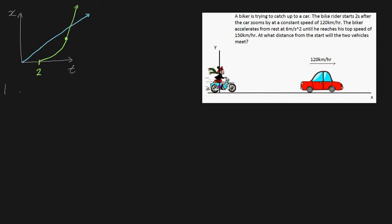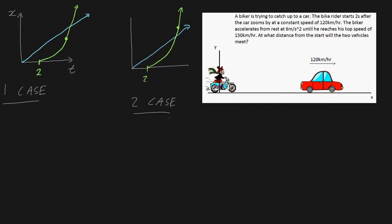That's case one. Another case is if the biker meets up with the car while he's still accelerating. So in case two, the parabola could intersect the car's curve before the biker reaches his max speed of 150 kilometers per hour. We don't know which case is true.